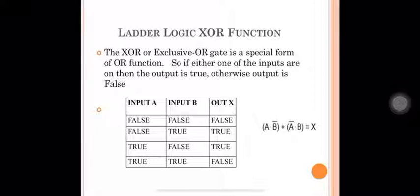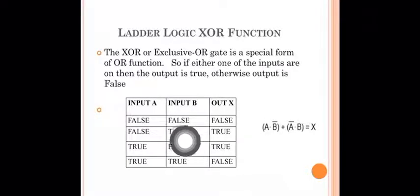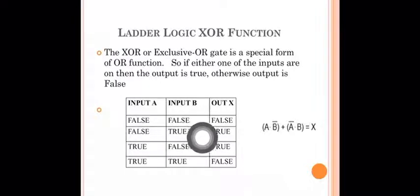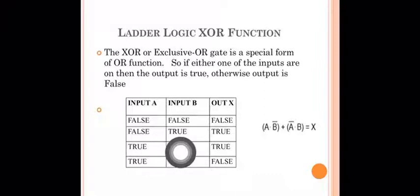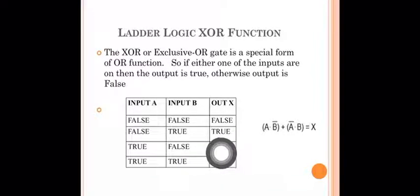This is the XOR gate truth table. Input A is FALSE and input B is also FALSE, so the output is FALSE because they are in the same state. Next, input A is FALSE and input B is TRUE. Now we have a different state, so the output is TRUE.